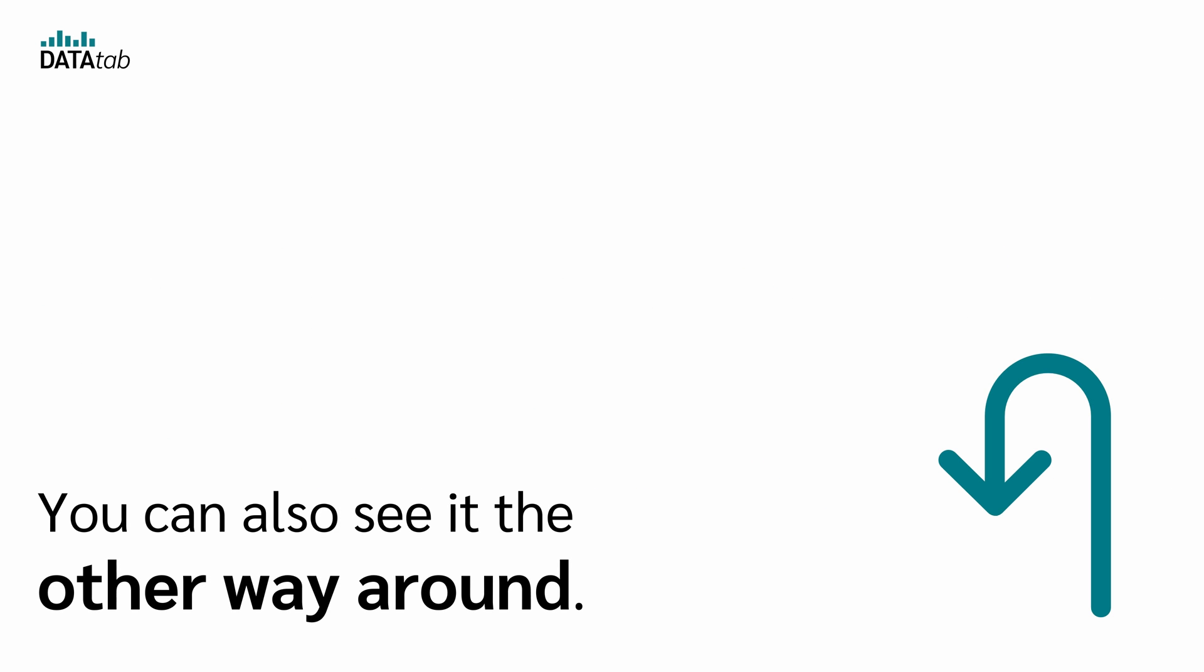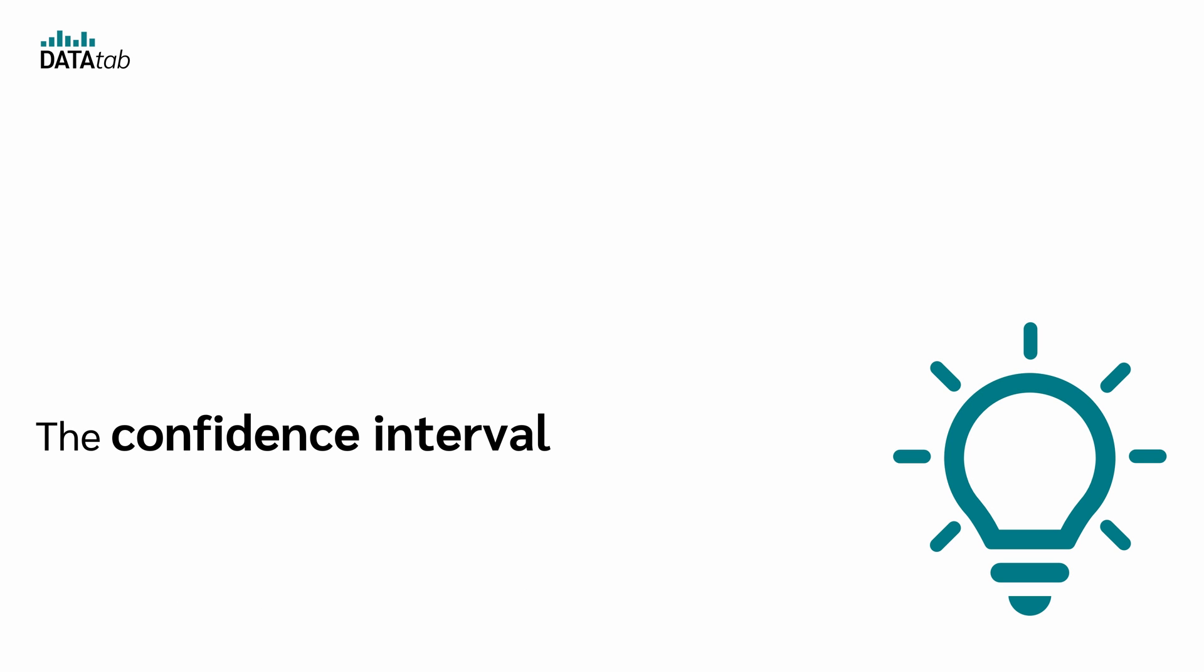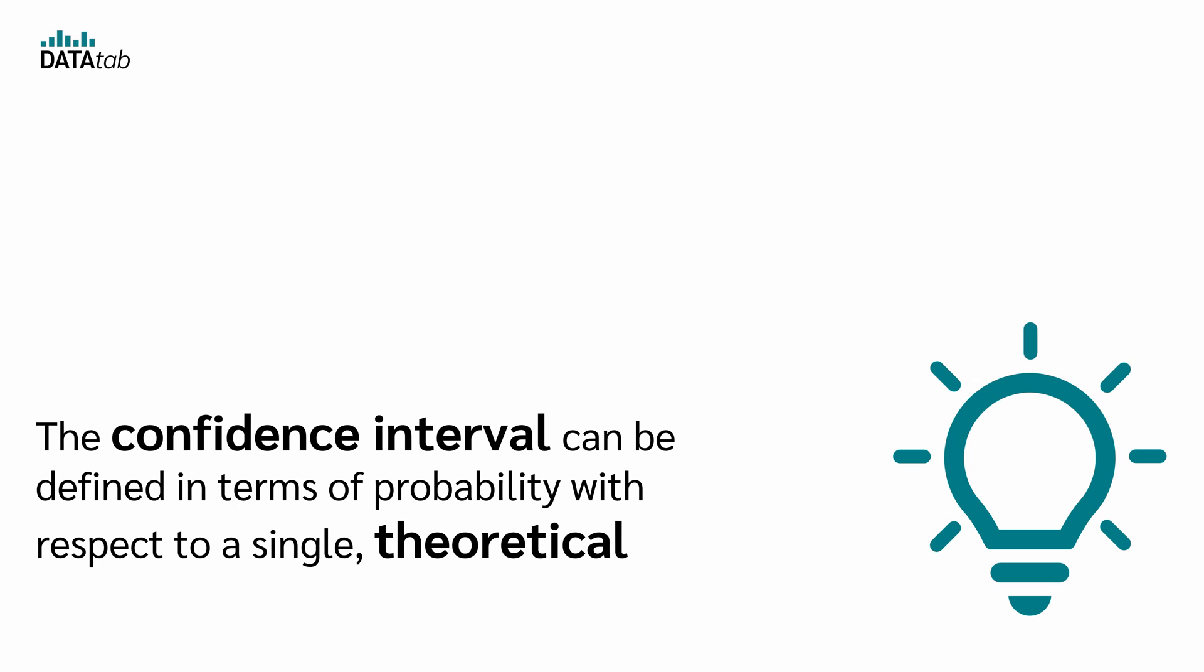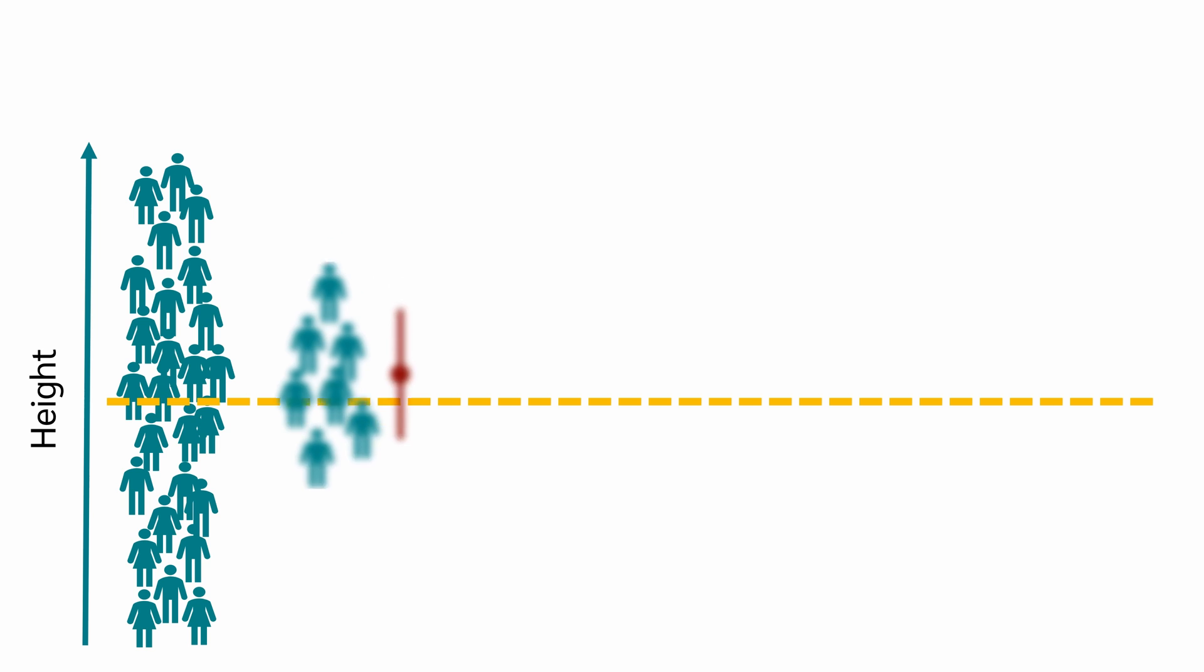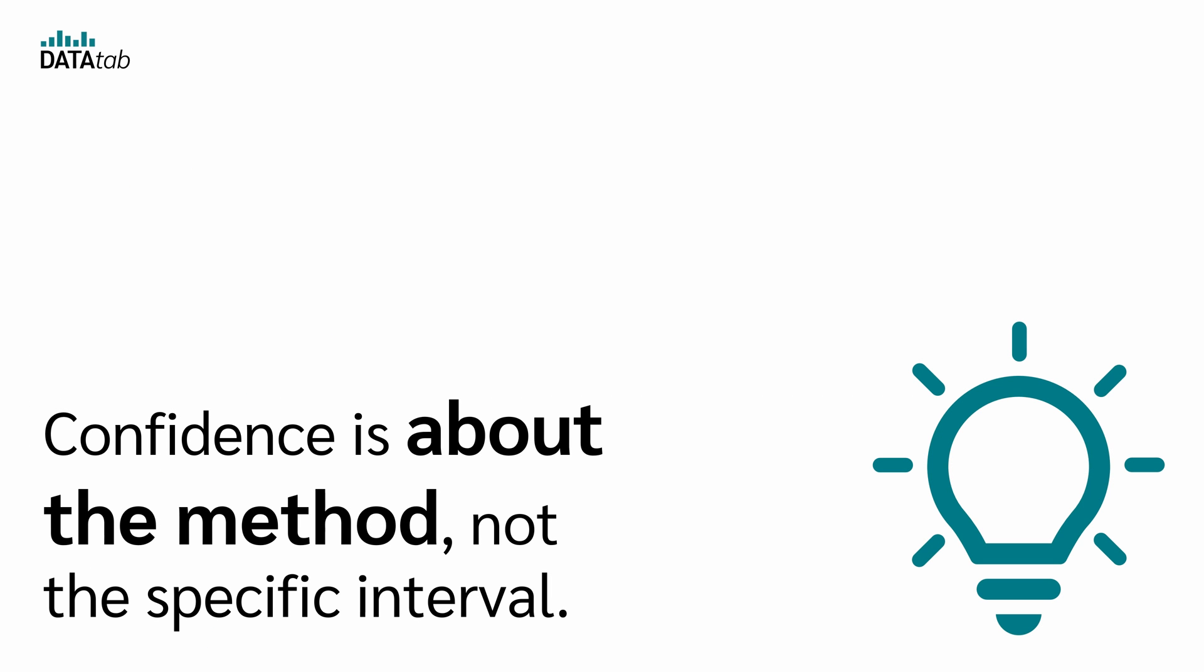You can also see it the other way around. The confidence interval can be defined in terms of probability with respect to a single theoretical sample that has yet to be realized. Therefore, if you haven't drawn the sample yet, you can be 95% sure that the interval from the next sample you draw will contain the true value. But if you have taken the sample, the true value is either in the interval or not. Therefore, confidence is about the method, not the specific interval.